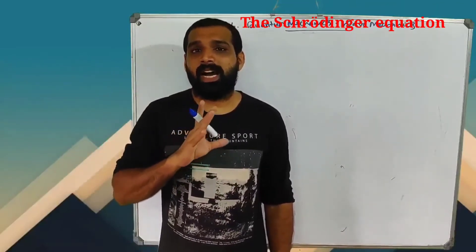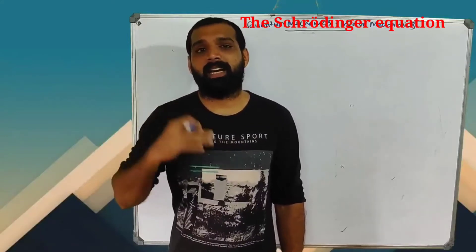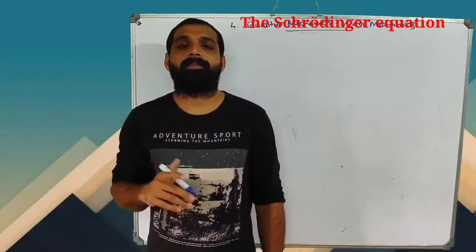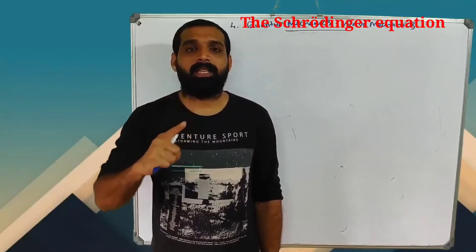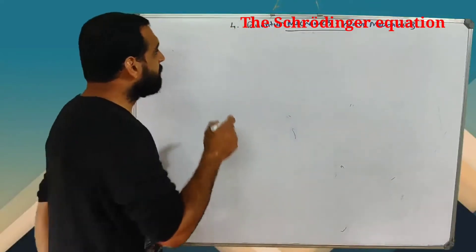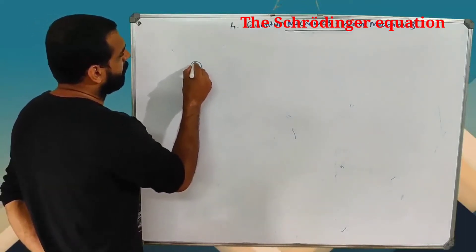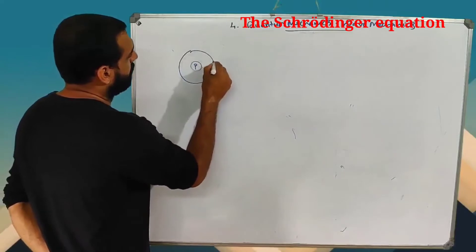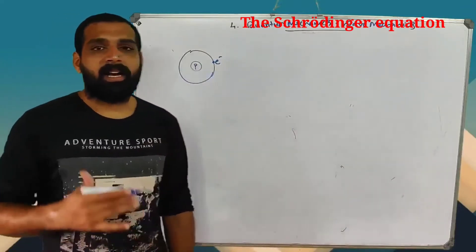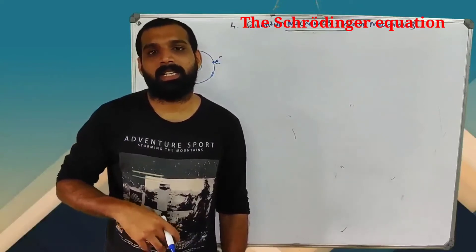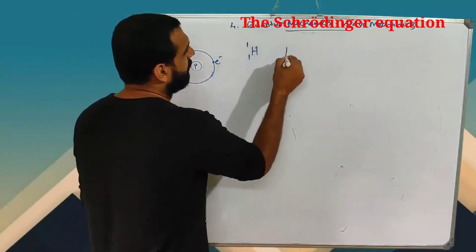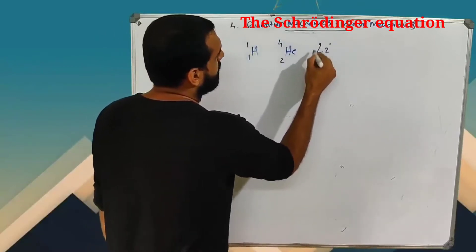The Bohr model works only with hydrogen atoms or hydrogen-like atoms. A hydrogen atom has a nucleus that is a proton and one electron — it's a hydrogen atom, not a neutron. Hydrogen-like atoms include 1H1, helium-like He with 2 and 4 atoms, and lithium-like Li with 3 and 6 atoms.